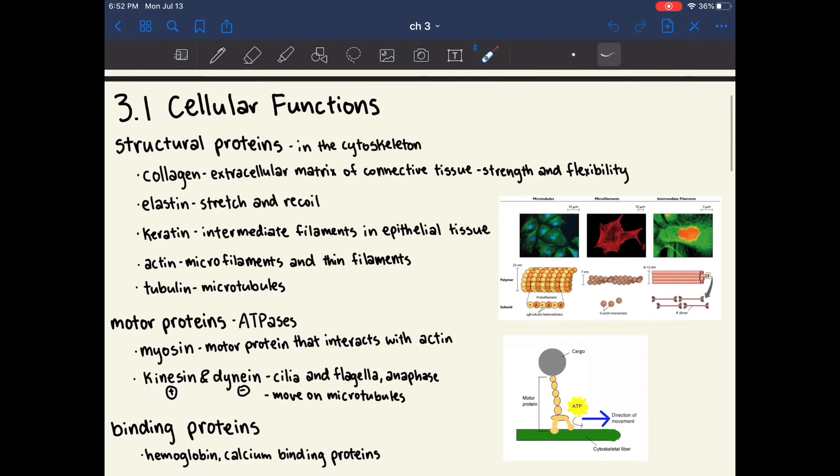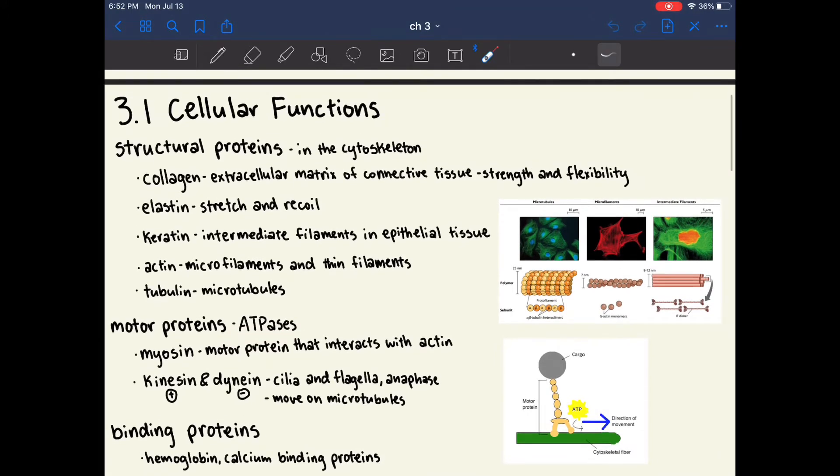Motor proteins are also known as ATPases because they require ATP in order to move their cargo. The first type of motor protein is called myosin, and myosin is a motor protein that interacts with actin. Kinesin and dynein are similar to myosin, but they move on microtubules. Kinesin moves toward the positive end of a microtubule, and dynein moves toward the negative end of a microtubule. Kinesin and dynein are also involved in the movement of cilia and flagella, as well as the contraction of the cell during anaphase.